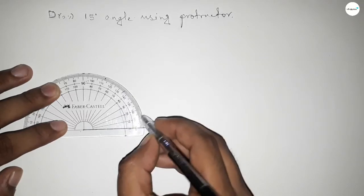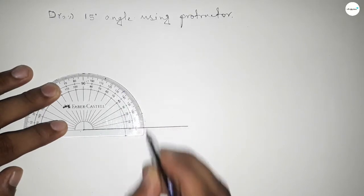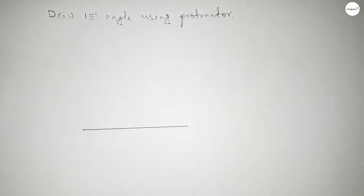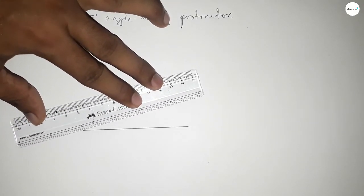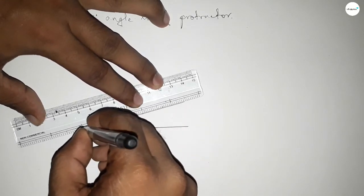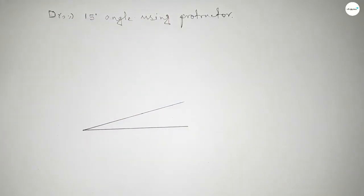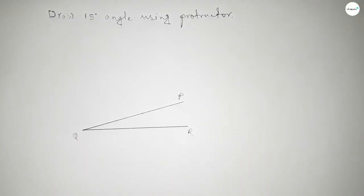Between 10 and 20, we can get 15 degrees. So this is 15 degrees. Now join this to get 15 degrees. So we got a 15-degree angle by joining this. Label this as P, Q, and R.